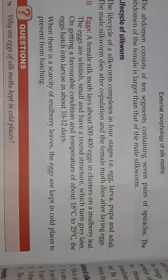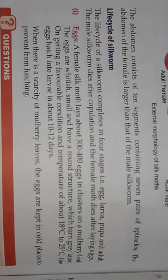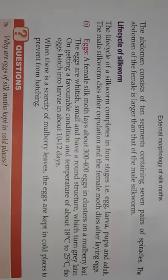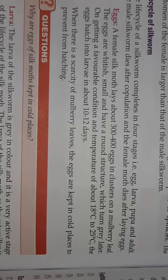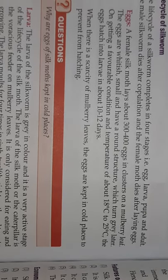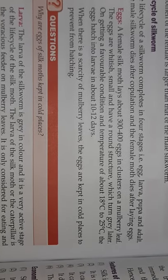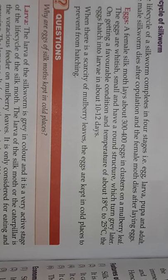The life cycle of silkworm is divided into four parts: egg, larva, pupa, and imago or adult. The eggs occur in clusters of three to four, and are small round structures. On getting favorable temperature of around 24-25 degrees Celsius, they hatch into larvae in 10 to 12 days. If there is a scarcity of mulberry leaves, the eggs are kept in cold places to prevent them from hatching.